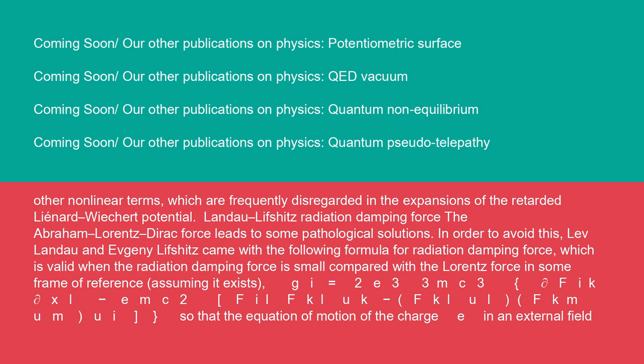Landau-Lifshitz radiation-damping force: the Abraham-Lorentz-Dirac force leads to some pathological solutions. In order to avoid this, Lev Landau and Yevgeny Lifshitz came with the following formula for radiation-damping force, which is valid when the radiation-damping force is small compared with the Lorentz force in some frame of reference, assuming it exists.